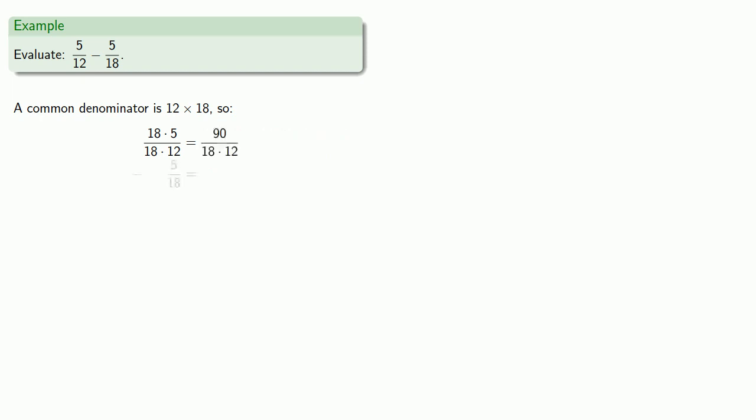The other fraction, five-eighteenths, our denominator is missing the factor of twelve, so we'll supply it. Again we'll multiply our numerator factors together, but leave our denominator in factored form.